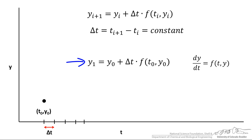So y1 is equal to y0, that is the current, plus Δt times the function value at our current time and y.